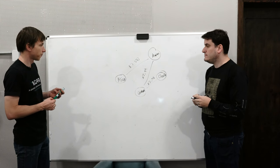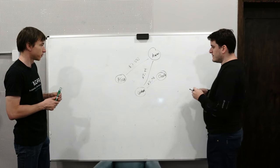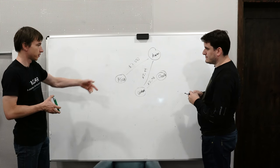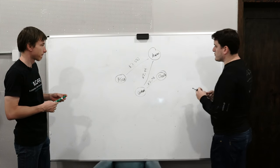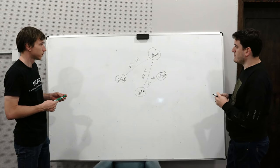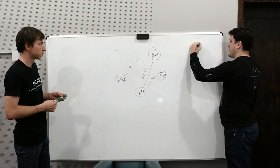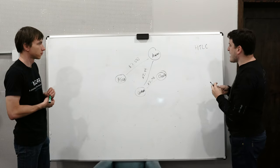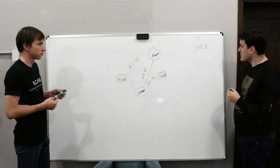Interledger starts at a very high level of abstraction. I usually use payment channels when explaining it because that makes the analogy to Lightning Network clear, but it really is much more general than that. And I think you'll see why when we talk about how they accomplish atomicity.